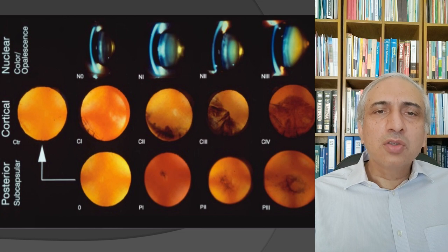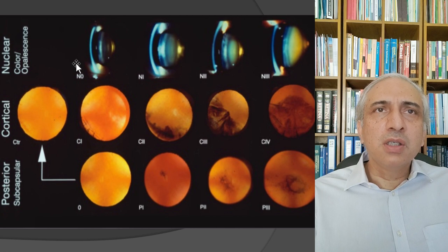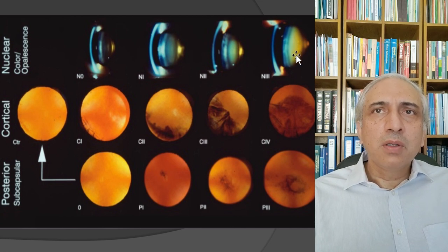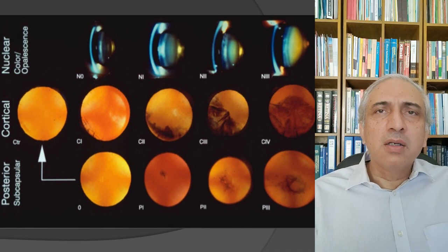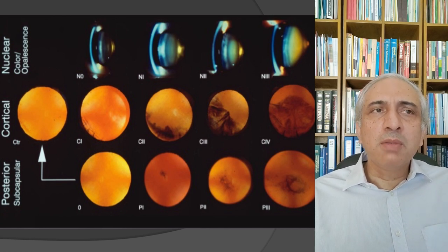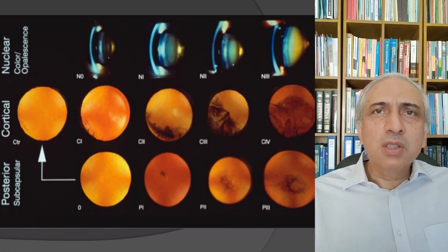The LOCS II (Lens Opacification Classification System developed by Oxford) grades nucleus sclerosis from 1 to 4 — from a greenish tinge to a yellowish-brownish tinge. Cortical opacities start as peripheral wedges and spokes progressing centrally. Posterior subcapsular cataracts begin as small central opacities that gradually increase. This classification is essential for postgraduate examinations.